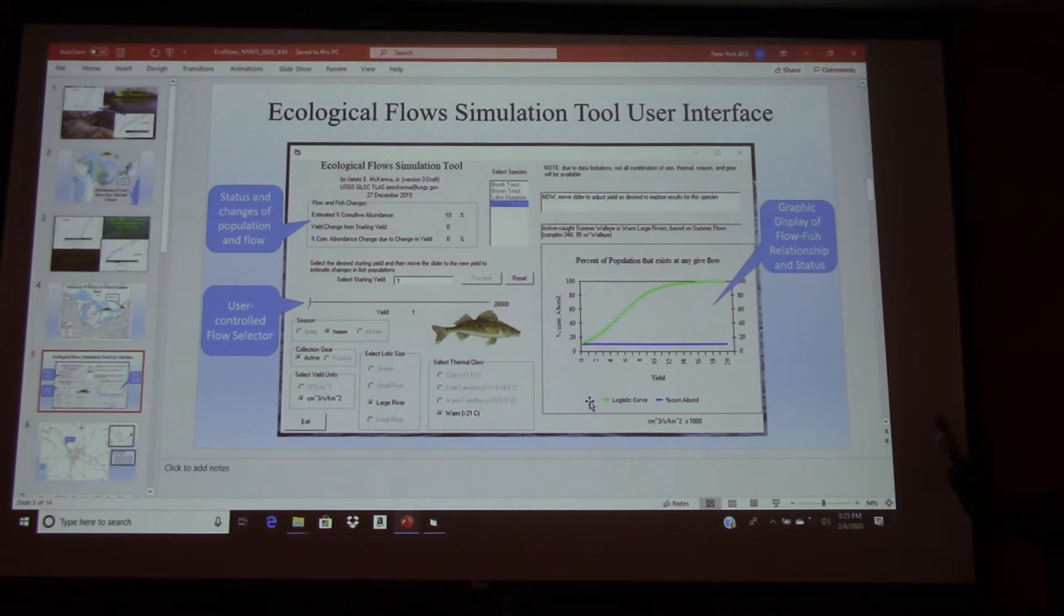And then you decide what kind of system you want. If it's large rivers or small cold streams or whatever it may be. And then whether it's summer or, excuse me, spring. And when you enter a value to start your yield, wherever you want to begin as your reference point, and hit the proceed button.